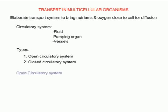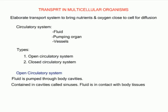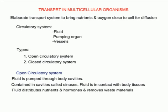In an open circulatory system, the fluid is pumped and flows through body cavities called sinuses. These cavities are free spaces between the body walls and organs, with ventral and dorsal cavities. The fluid in the cavities is in direct contact with body tissues, distributing nutrients and hormones while removing carbon dioxide and nitrogenous waste from the tissues. Members of the phylum Arthropoda have an open circulatory system.